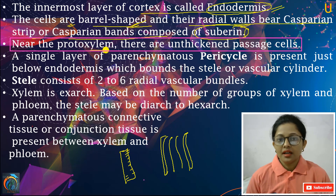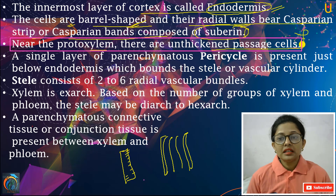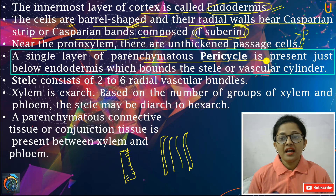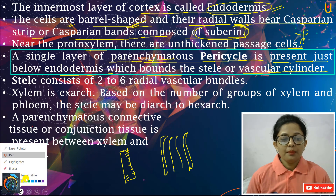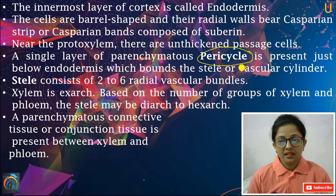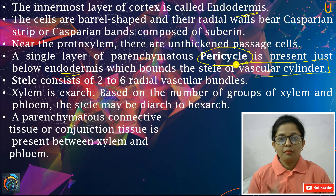Near the protoxylem, primary xylem, there are unthickened passages. Ab yahan pe iske paas kya hai? Xylem bhi present hoga, primary xylem. Us primary xylem ke paas, and a single layer of parenchyma — that is pericycle — is present just below endodermis, which bounds the vascular cylinder. Yahan pe jo hamare single layer of parenchyma, that is pericycle, is present just below endodermis, which bounds the vascular cylinder.